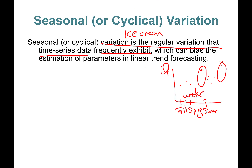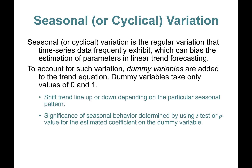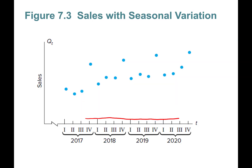This also applies to home sales — during spring and summer, home sales trend upward. To account for such variation, we use dummy variables and add them to the trend equation. These variables take on only values of zero or one, which shifts the trend line up or down depending on the seasonal pattern. The significance of seasonal behavior is determined by a t-test or p-value for the estimated coefficient on the dummy variable.